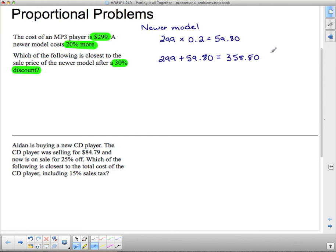And here's the nice thing. I still have this $59.80 on here. If you don't clear your calculator all the time, then you can just go plus $299. $358.80. Okay. So we got our newer model, and this is the price of the newer model. This is how much more it costs than the old model. This is the price of the newer model. So I've dealt with this little bit of information.